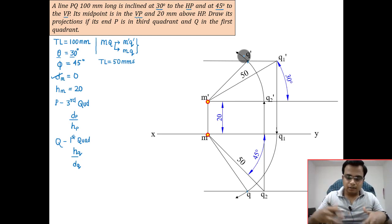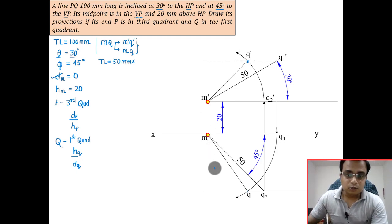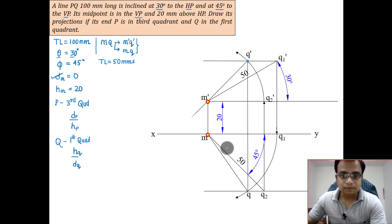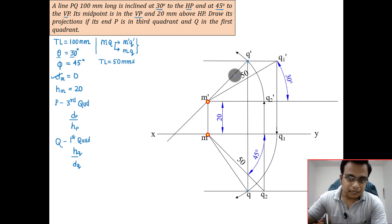Half line has been done, the remaining half is still left. Draw a line randomly, stretch this front view in the backward direction. Keep one leg of your compass at m dash, other leg at q dash.